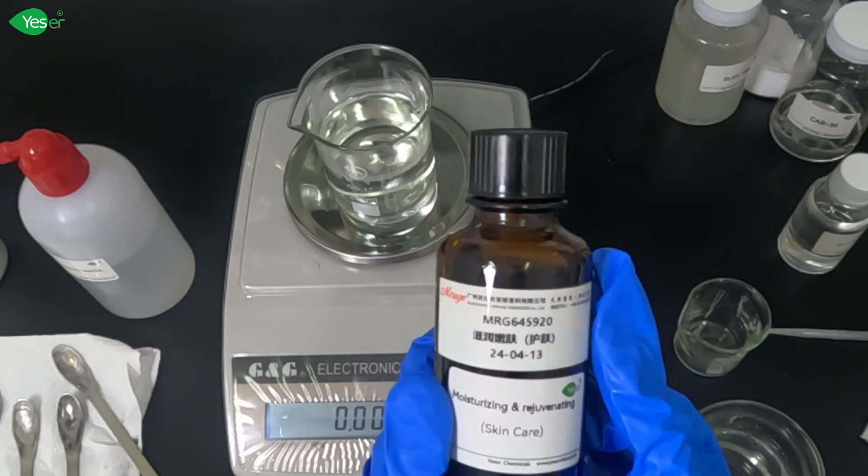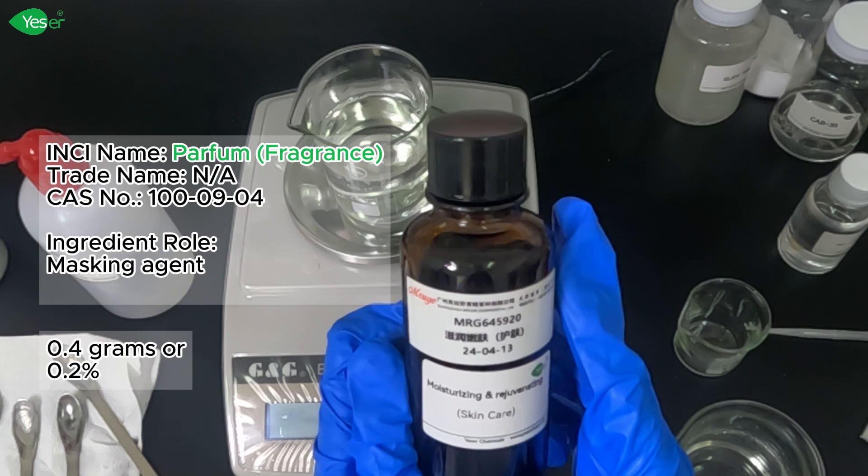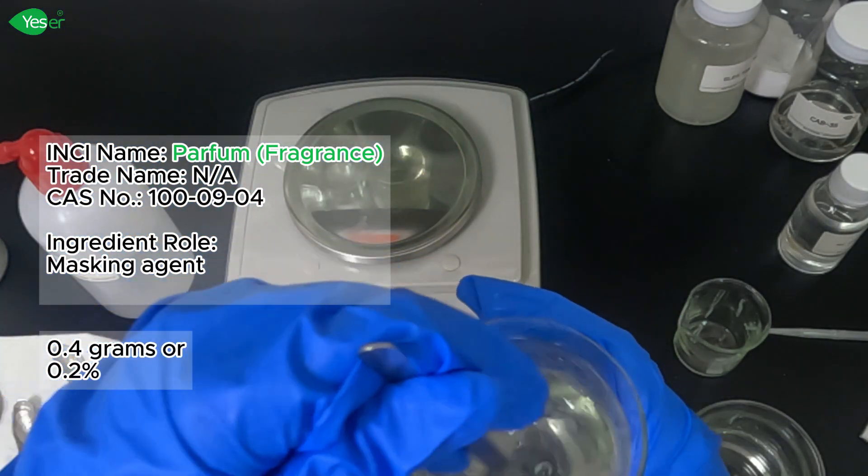Now let's add our fragrance for this formulation. We'll add about 0.4 grams of our fragrance, 0.2% for our formula. Stir this well until it is fully incorporated.